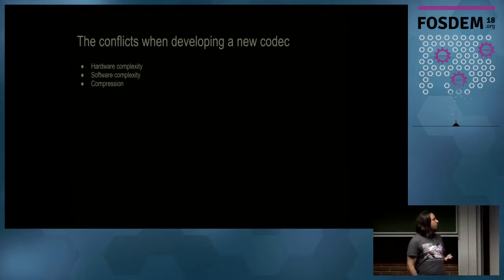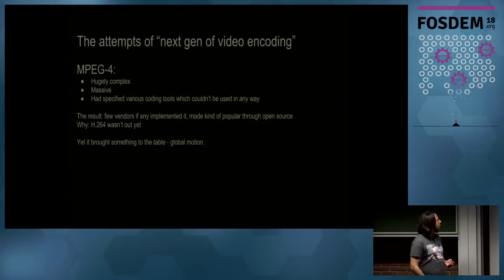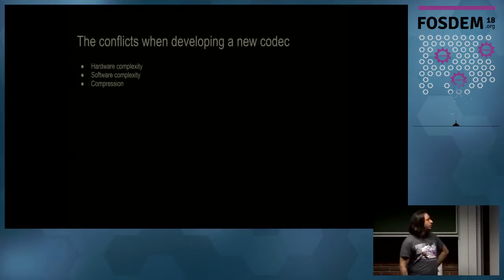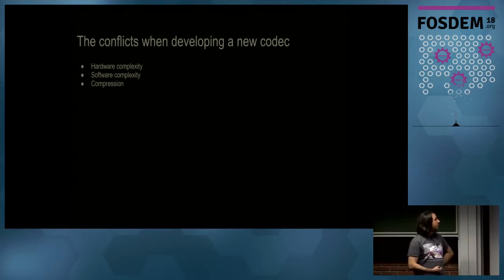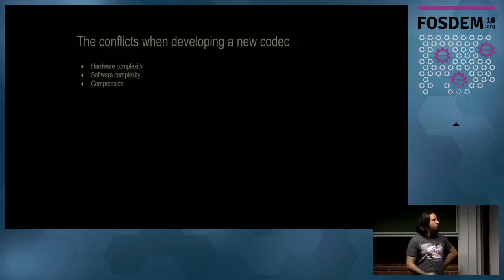So what does it take to develop a new codec? You need to balance three things: hardware complexity, software complexity, and compression. And finally, you also need to satisfy licensing and any patents. If you don't do that, you'll suffer the fate of the codecs I talked about.